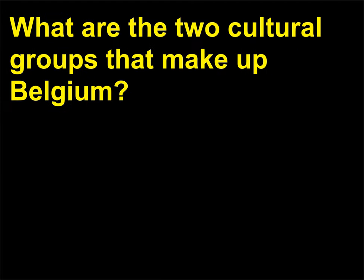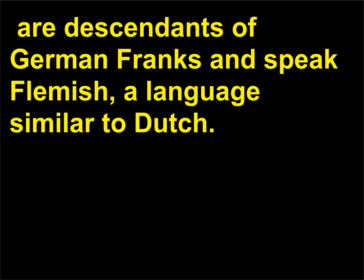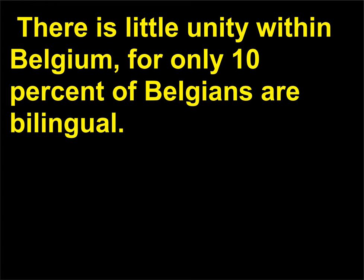What are the two cultural groups that make up Belgium? The Walloons in southern Belgium, called Wallonia, are descendants of the Celts and speak French. The Flemings in northern Belgium, called Flanders, are descendants of German Franks and speak Flemish, a language similar to Dutch. There is little unity within Belgium, for only 10% of Belgians are bilingual.